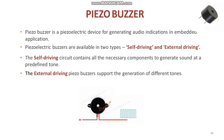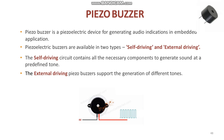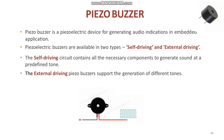Next, moving on to the FISO buzzer. A FISO buzzer is a type of electronic device used to produce tone, alarm, or sound. A FISO electric buzzer contains a FISO electric diaphragm which produces audible sound in response to the voltage applied to it. FISO electric buzzers are available in two types: self-driving and external driving. The self-driving circuit contains all the necessary components to generate sound at a predefined tone and will generate a tone on applying the voltage. The external driving FISO buzzers support the generation of different tones; the tone can be varied by applying a variable pulse train to the FISO electric buzzer.